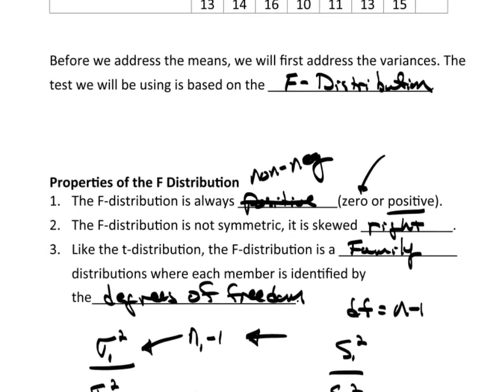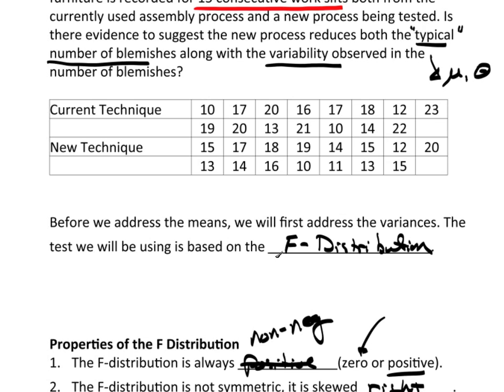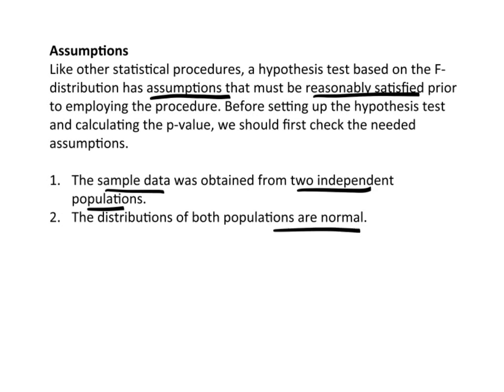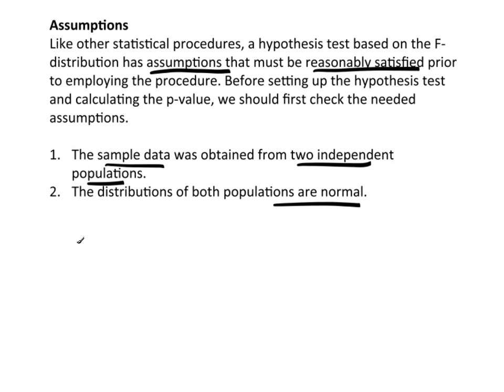Going back up to my data here, these are two different machines, the current technique and the new technique. These are clearly independent. There's no natural pairing here that you could possibly come up with. So, I would have to say something here. First of all, the parameters will be sigma C squared for the current, and sigma N squared. So, I'm going to compare these two variances.